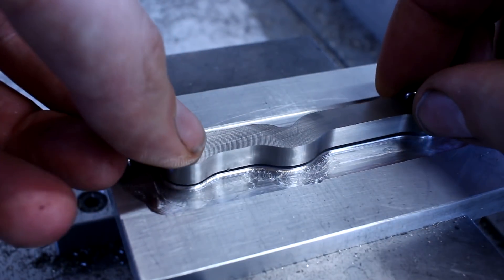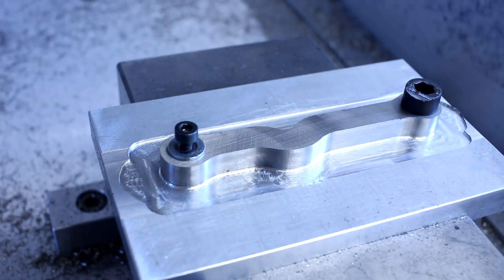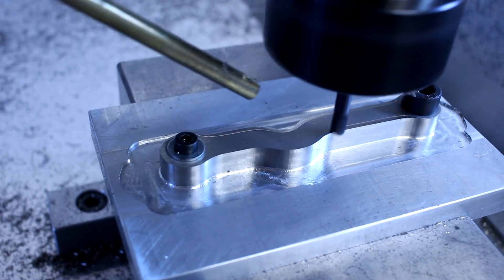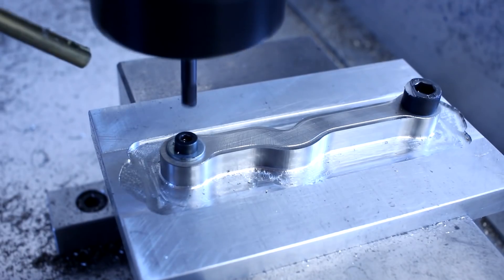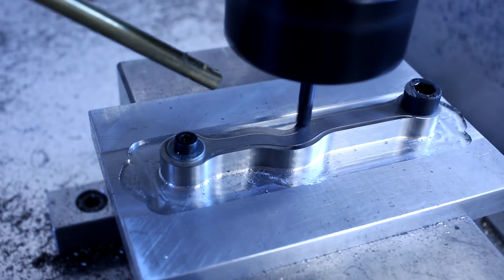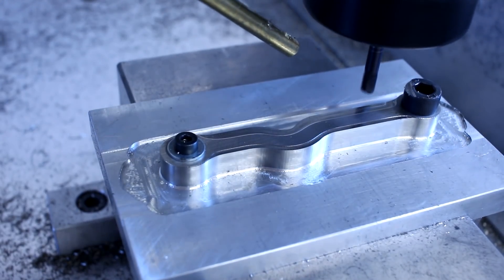After I had all of them profiled out, I came back to them and I used a 4mm foreflute 0.5mm corner radius bullnose end mill to do the 3D work on these parts.